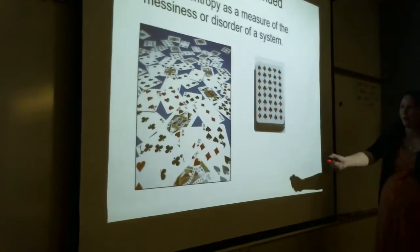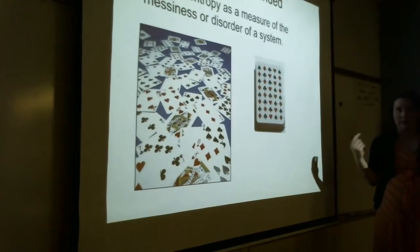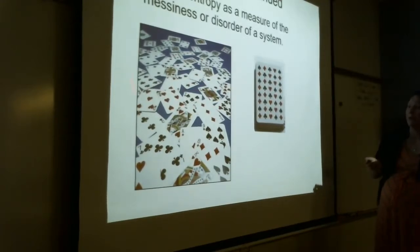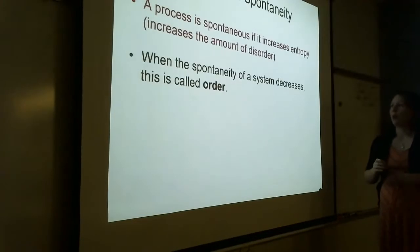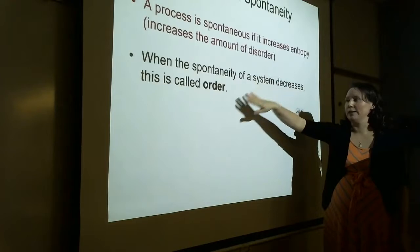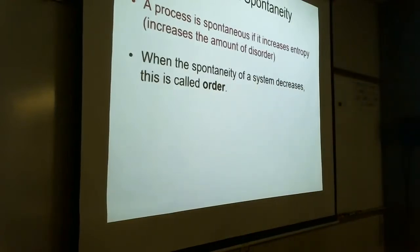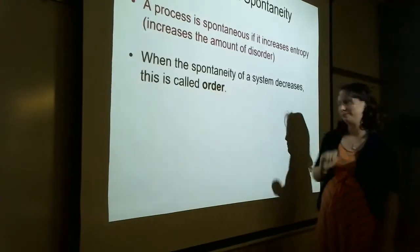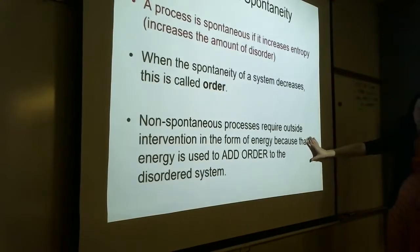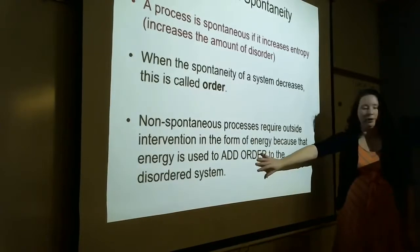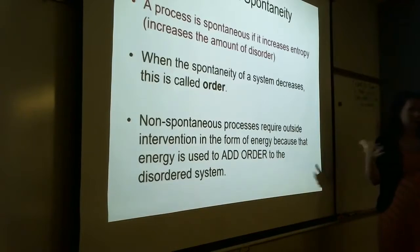To get from disorder to order requires effort — that's non-spontaneous. A process is spontaneous if it increases entropy. Spontaneous processes increase disorder. If you reduce entropy, you are adding order to your system. A non-spontaneous process requires outside intervention and therefore adds order. So spontaneous and non-spontaneous are opposites in terms of entropy change.